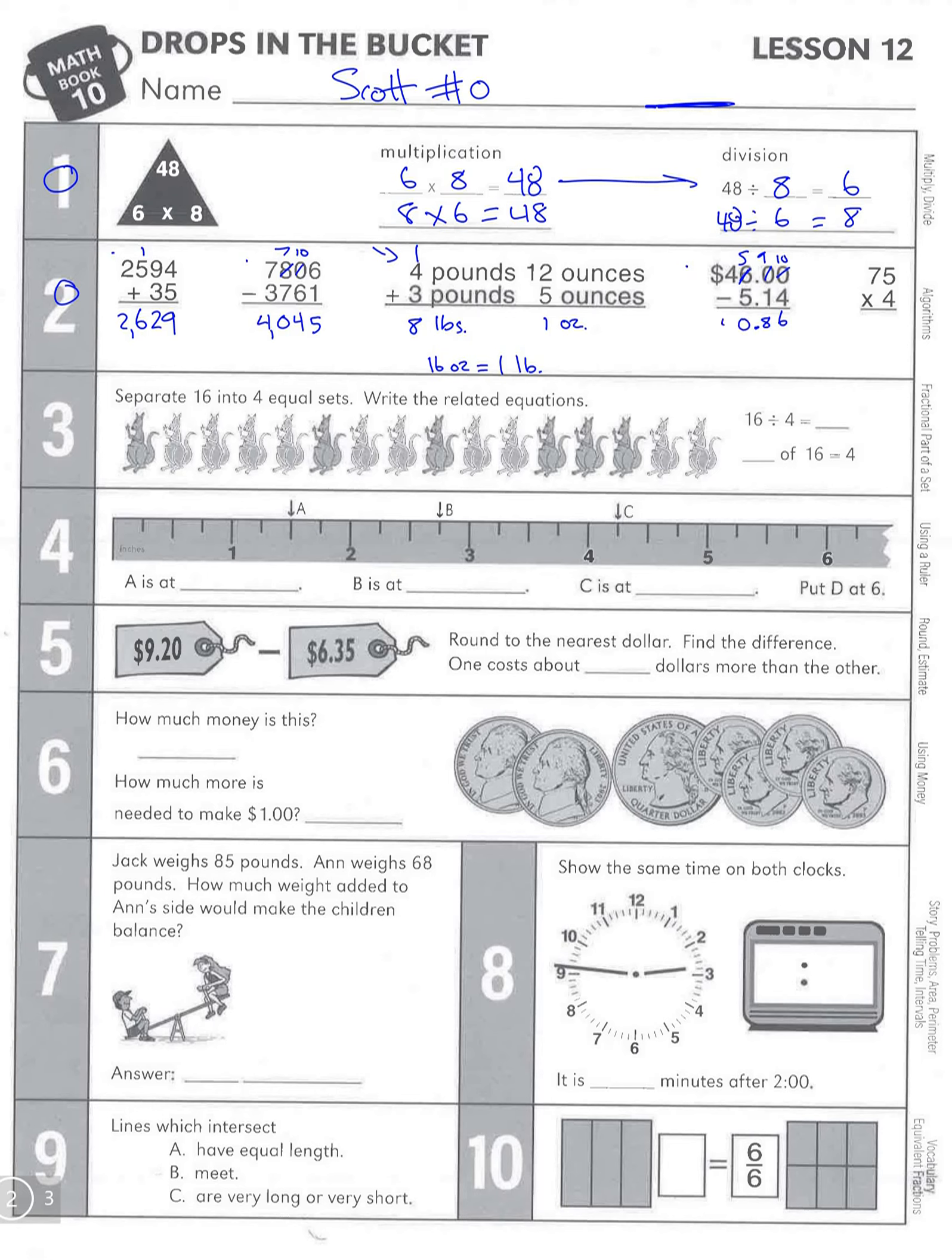Multiplication: go straight up, 4 times 5 is 20, so there's our 2, and then 4 times 7 is 28, 29, 30. So 300.